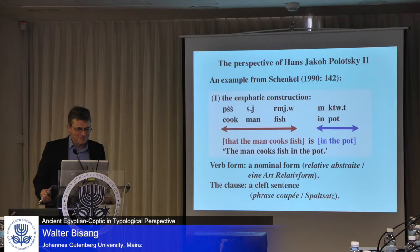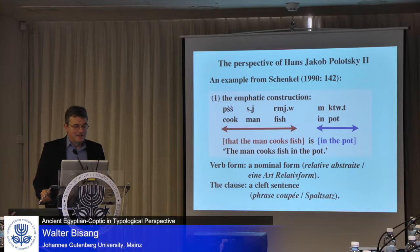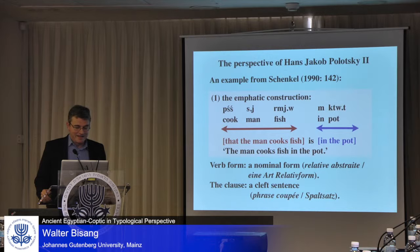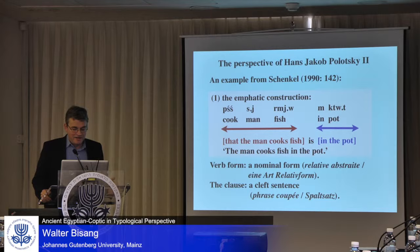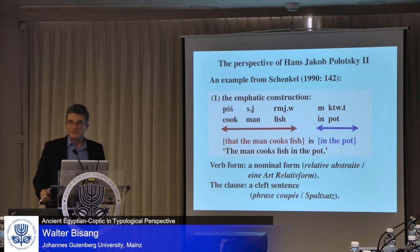To give you a very short example with an invented example from Schenkel 1990, here's a sentence with the word 'cook,' the verb — man, fish, in pot — and the translation would probably be something like 'the man cooks fish in the pot.' Now, in Polotsky's interpretation, what I've marked in red is actually a nominalized form, so the verbal form here is transposed, transformed into a nominal form. We would have to translate that as 'the man cooks fish,' then the copula 'is,' and the prepositional phrase, the adverbial element 'in the pot.' So the verb form is nominal, some sort of relativ abstrait as he said, or eine Art Relativform as he called it later. And the clause as such is a cleft sentence, une phrase coupée, or in German, Spaltsatz.